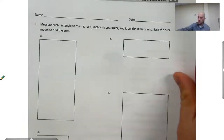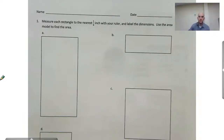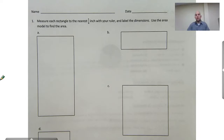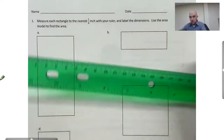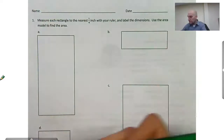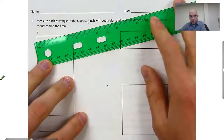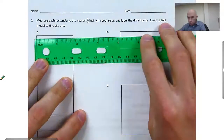So we look at our first page here. It says measure each rectangle to the nearest one-fourth inch with your ruler and label the dimensions. I'll use the area model to find the area. So first I'm going to take my ruler and measure my sides. I need to find the inch side of my ruler, and I'm going to be going to the nearest quarter inch.